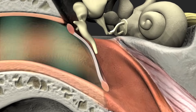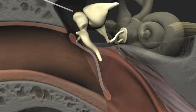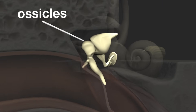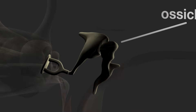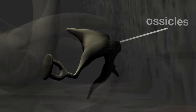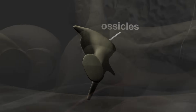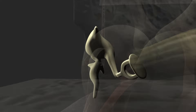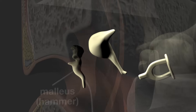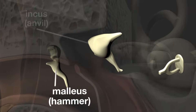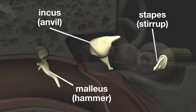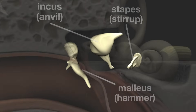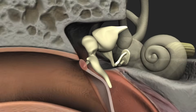The louder the sound, the more the membrane moves. The middle ear also contains three small bones known as the ossicles. These are connected in a chain across the middle ear, from the tympanic membrane to the entrance of the cochlea, called the oval window.